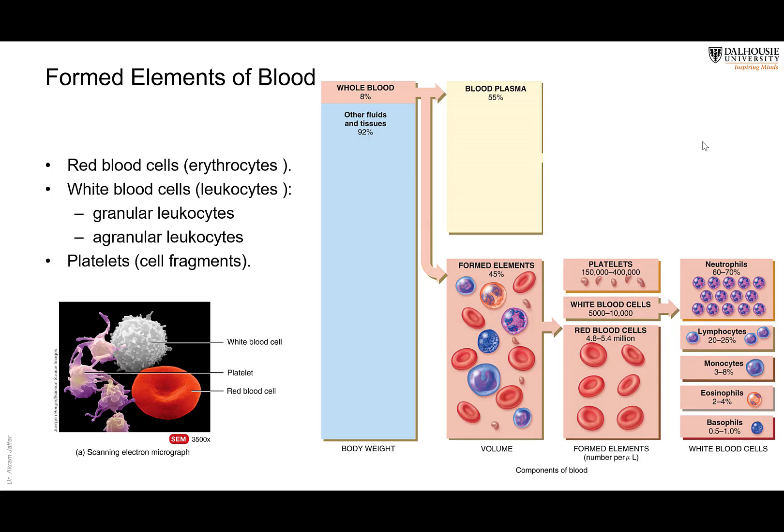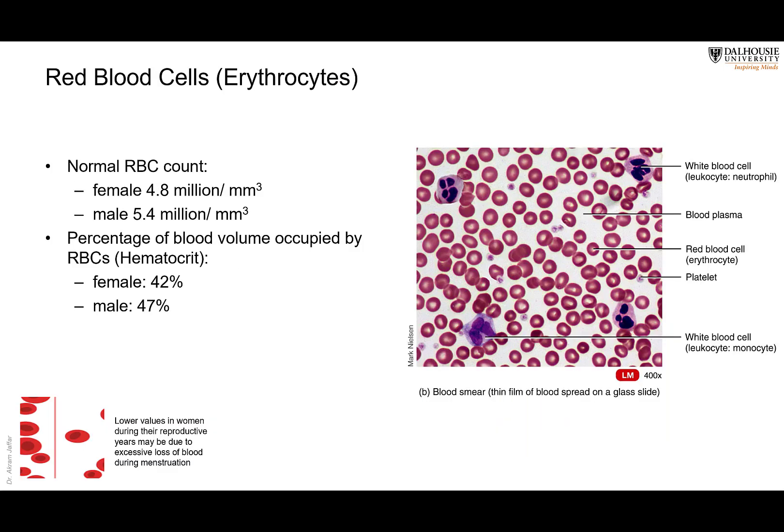Platelets are definitely not cells — they are fragments of cells. There is a very large cell in the bone marrow called megakaryocytes, and fragments of the cytoplasm of that cell are released into the blood, forming the disc-shaped structures we call platelets.